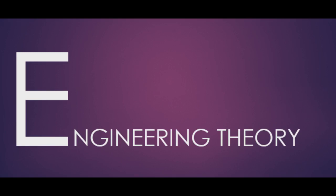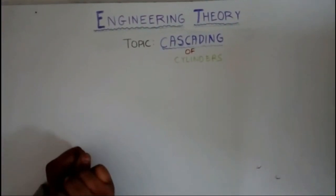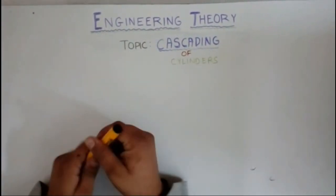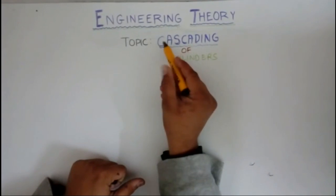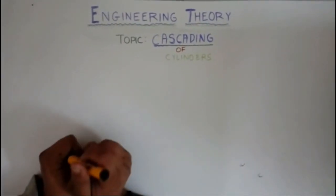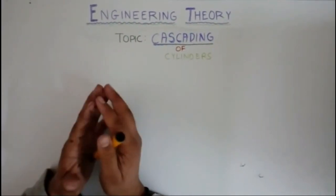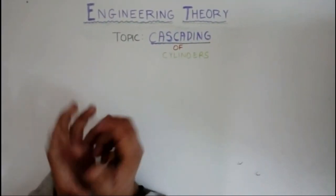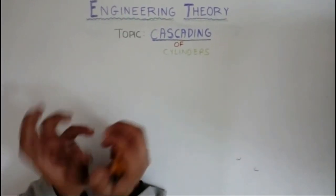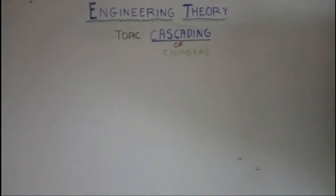Welcome to Engineering Theory. Today we will be discussing cascading of cylinders. Cascading is basically designing a logic circuit in pneumatics and hydraulics in which we control the movement of output actuators like cylinders.